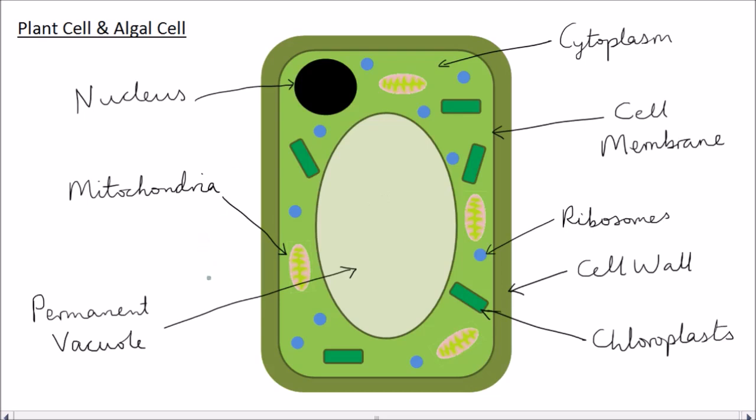So here are those things once again that are only found in plant cells and algae cells. There's the cell wall, there's the chloroplasts, and there's the permanent vacuole. Everything else is in common with animal cells. It's just these three things that plant cells have which animal cells don't have.